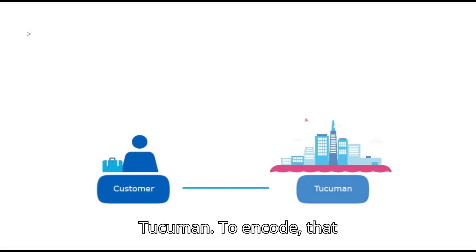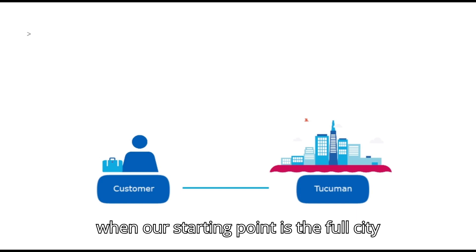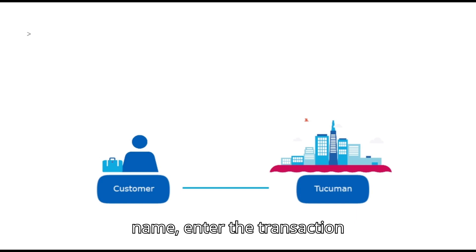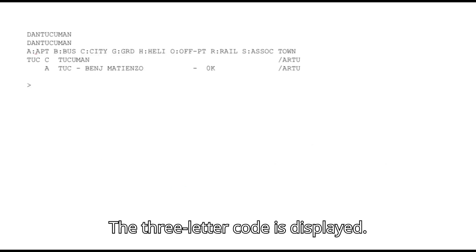Your customer is asking to travel to Tucuman. To encode — that is, to obtain the three letter city code when our starting point is the full city name — enter the transaction DAN Tucuman. The three letter code is displayed.